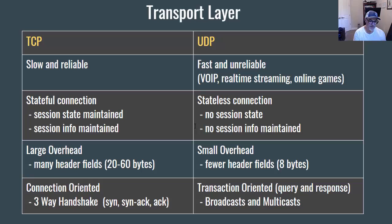TCP involves a stateful connection and UDP has a stateless connection. In TCP, session states are maintained, and the connection knows what the state is. There are also negotiated parameters and session information that are maintained — both the client and server know that information. In UDP, there's no session state and no session info maintained, so we call it a stateless connection.